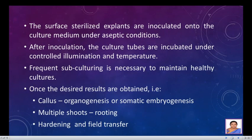The surface-sterilized explants are inoculated onto the culture medium under aseptic conditions. After inoculation, the culture tubes are incubated under controlled illumination and temperature. Frequent subculturing is necessary to maintain healthy cultures. Once the desired results are obtained — either callus or multiple shoots — you can proceed to organogenesis or somatic embryogenesis, then rooting, hardening, and field transfer.